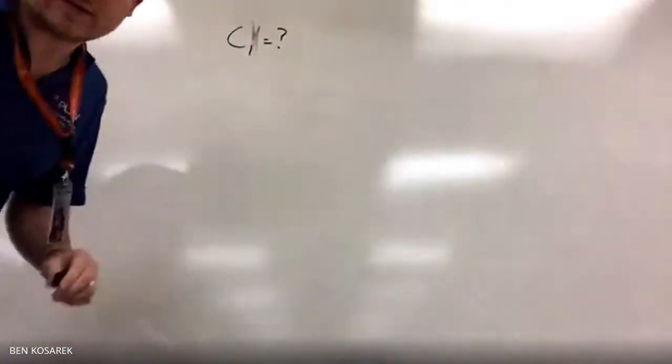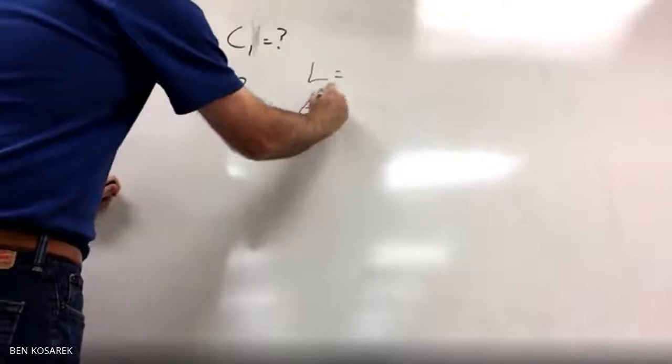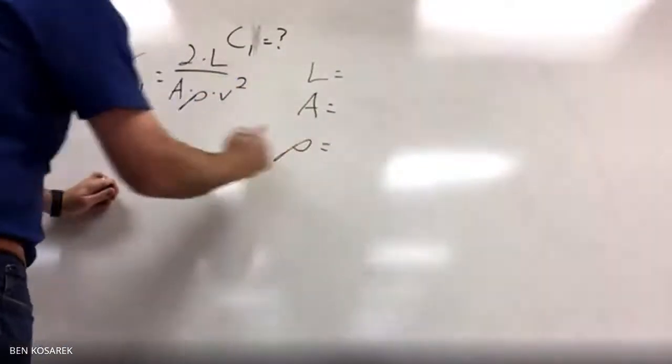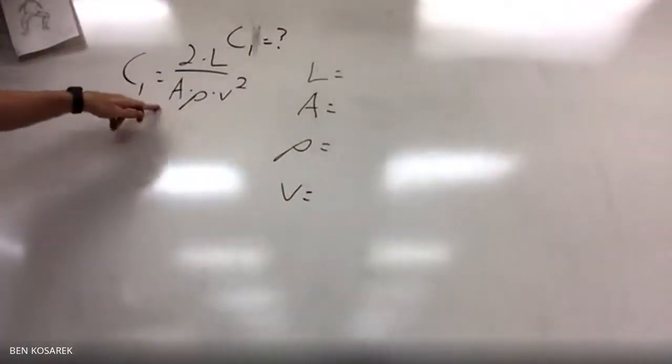We know the formula for coefficient of lift. It looks like this: CL equals 2L over A times rho times v squared. So we need to find our lift, area, density, and velocity to plug into this equation.